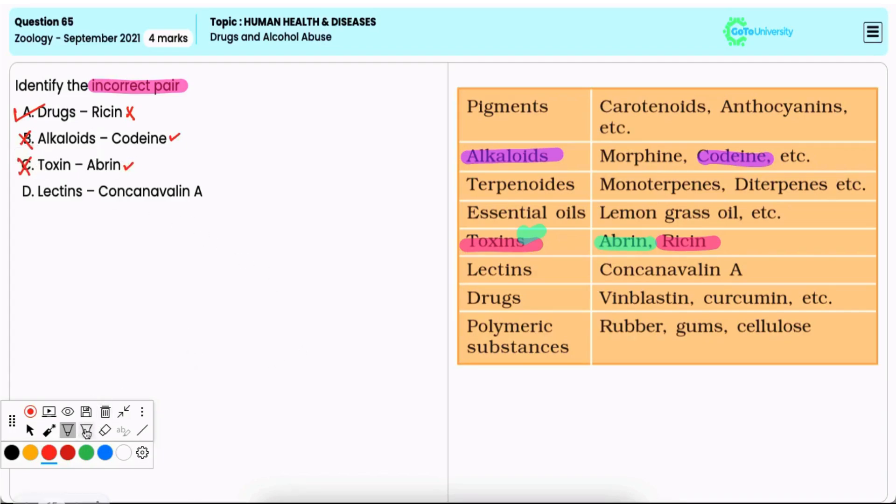Option D, lectins is to concanavalin A. Now, it is also a correct pair, as concanavalin A is a lectin, that is a type of protein that binds specifically to carbohydrates. Hence, it is an incorrect option.